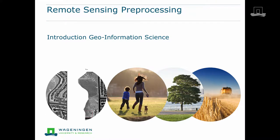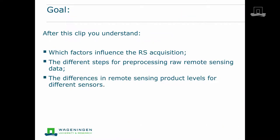Welcome to this clip dealing with various aspects of the pre-processing of remote sensing images. In this clip, I will first discuss various factors that influence the acquisition of remote sensing images. Subsequently, different steps in the pre-processing of remote sensing images will be presented, and finally, different product levels will be discussed.